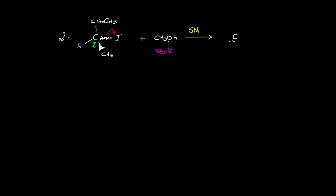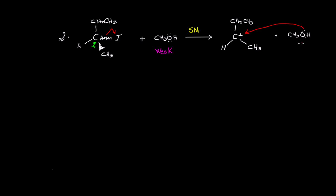I have to draw the carbocation obtained in the first step. Remember that the carbocation has sp2 hybridization, and therefore all bonds will be in the same plane since the geometry of the carbocation is trigonal planar. Since I have a planar molecule, the nucleophile has the option to attack from the above side or from the below side.